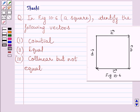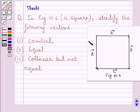Hi and welcome to the session. Let us discuss the following question. The question says: in figure 10.6, identify the following vectors. These are the given vectors and this is the given figure 10.6.